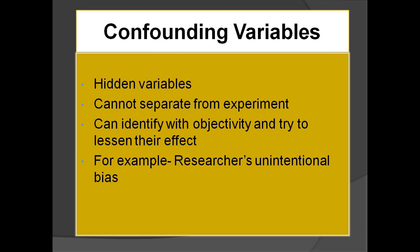Moving towards confounding variables — these are hidden variables we cannot fully see or separate from the experiment, but we can identify them with objectivity and try to lessen their effect. For example, a researcher's unintentional bias: if a teacher studies the effect of computer-assisted instruction on mathematics learning, the teacher may unintentionally give more effort to the group taught via computer-assisted instruction than to the traditional method group. This unintentional bias affects the study results, and while the researcher can identify and reduce it, it cannot be removed completely.